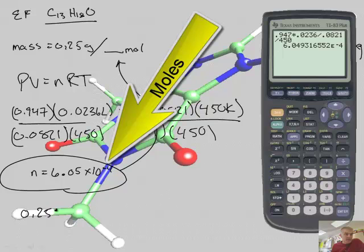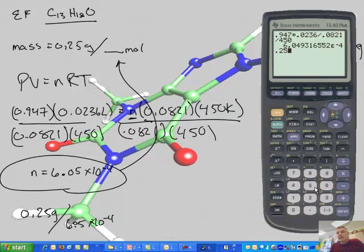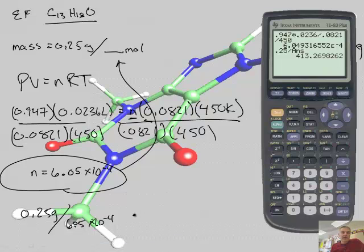That number is going to go up here. If I take 0.25 grams divided by 6.05 times 10 to the minus fourth, I can say second ANS which will retype this number, and I get a molar mass of 413 grams in one mole. That's easy now.